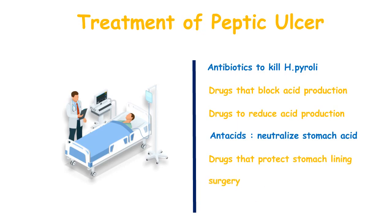Another treatment option is surgery, where the affected area is removed. The last treatment option is vagotomy. All of these are possible treatments for treating Peptic Ulcer.